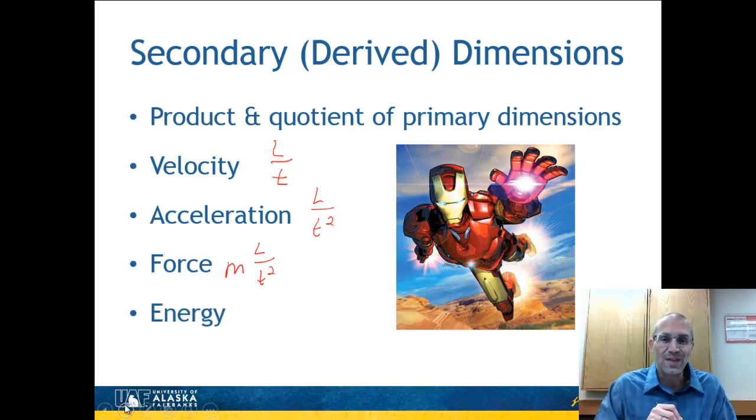And in that collision, there would probably be some type of energy. And so the mixture of units for energy, well, as you'll see later, that's a force through a distance. So it's going to be a mass, a length squared per time squared. So these are called derived dimensions or secondary dimensions because they're mixtures of the primary dimensions.